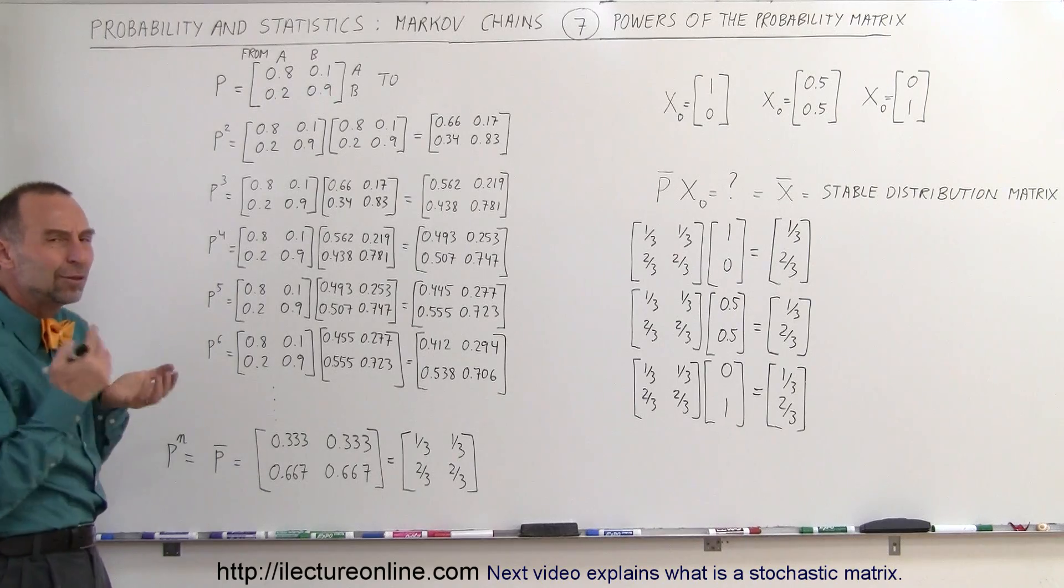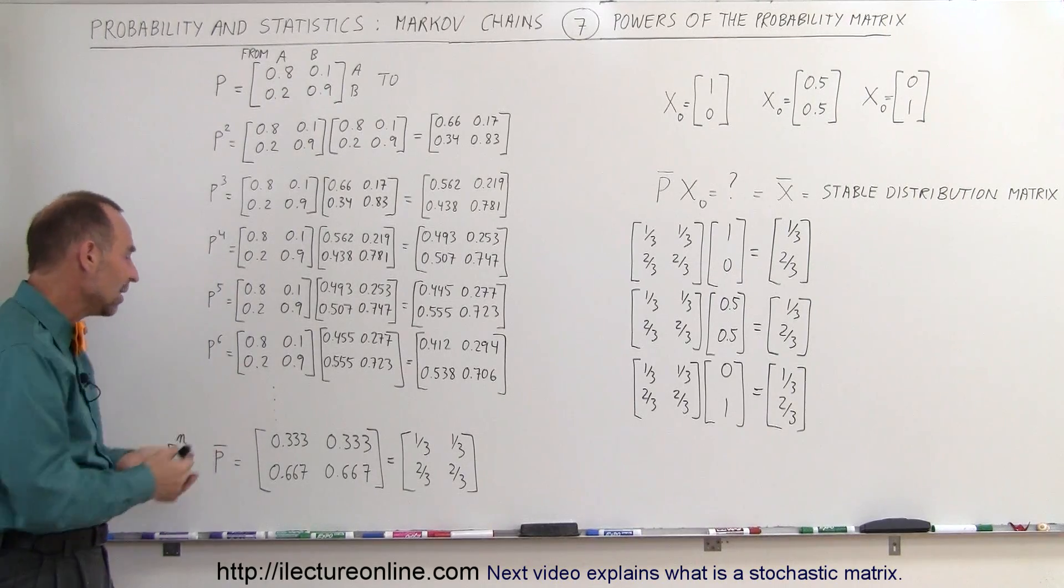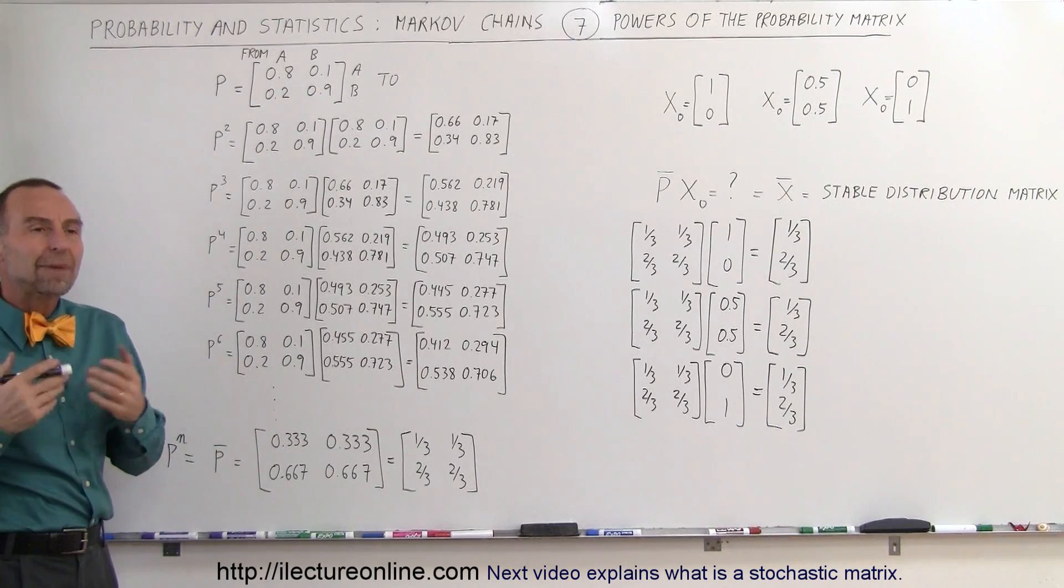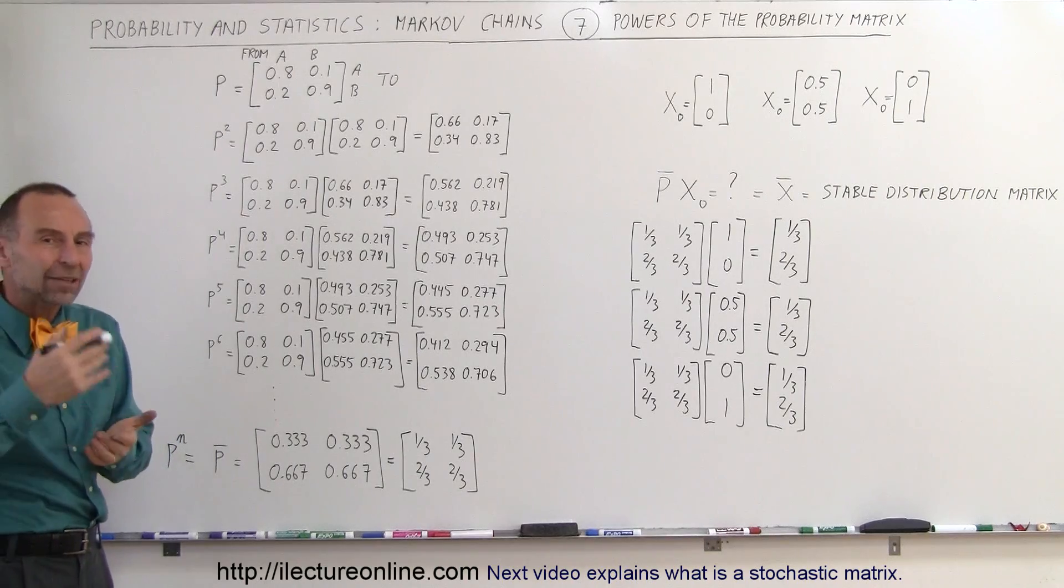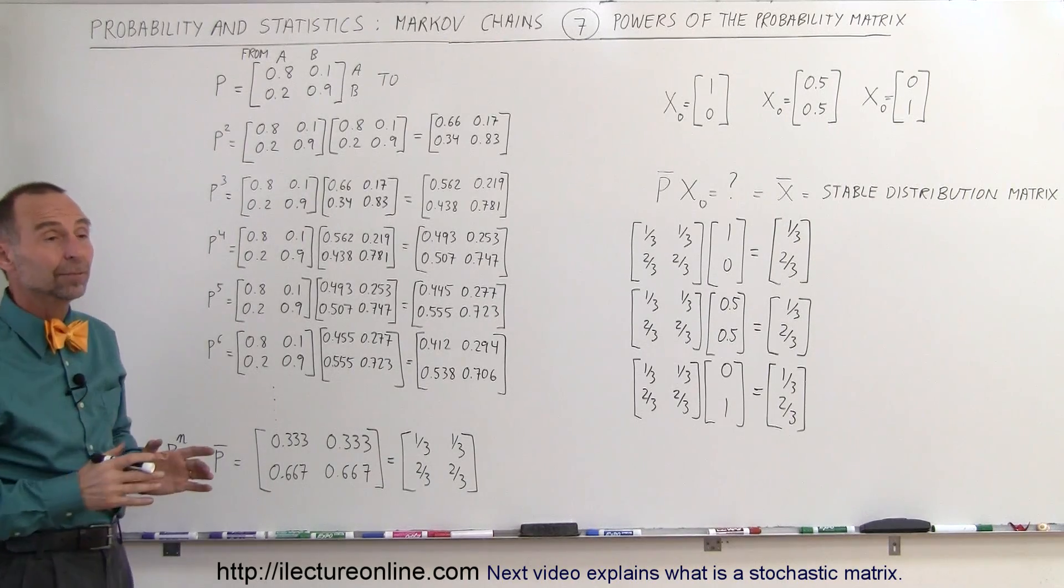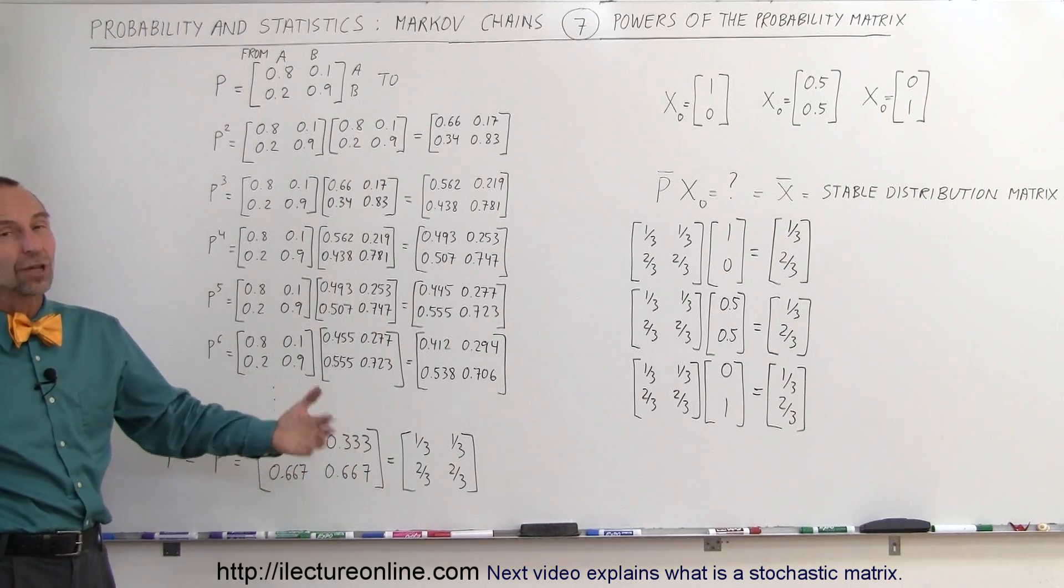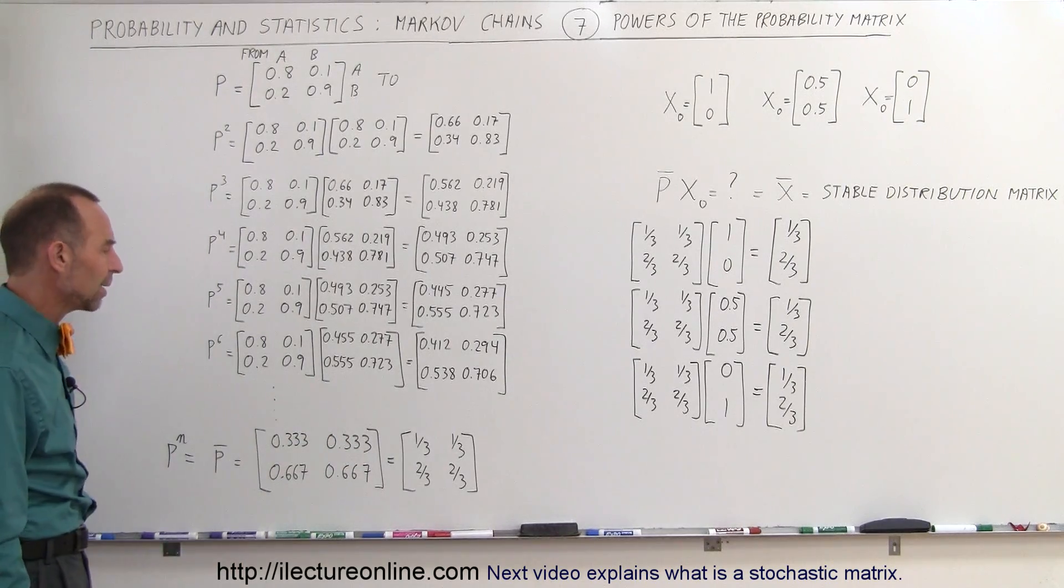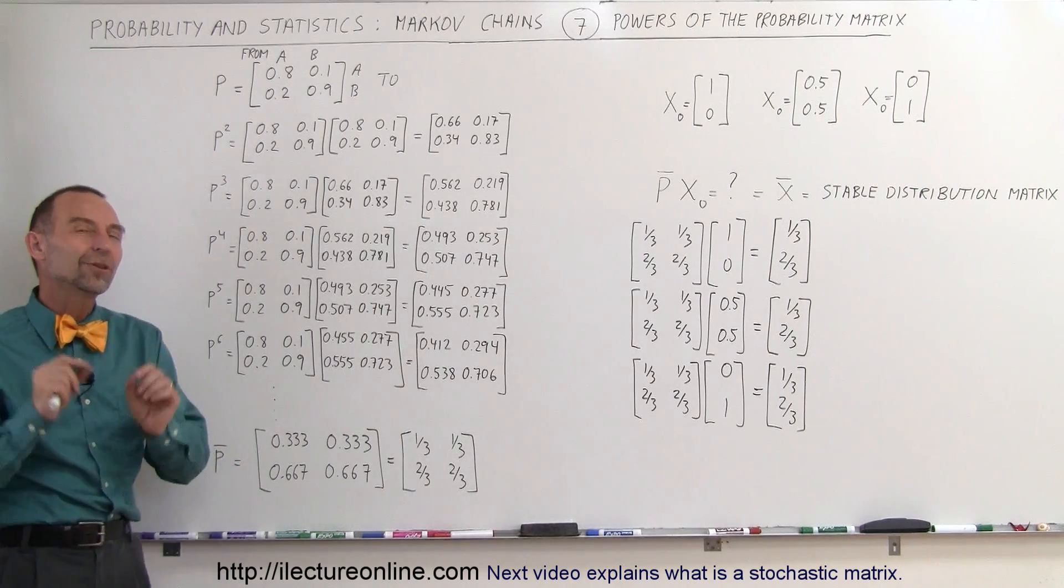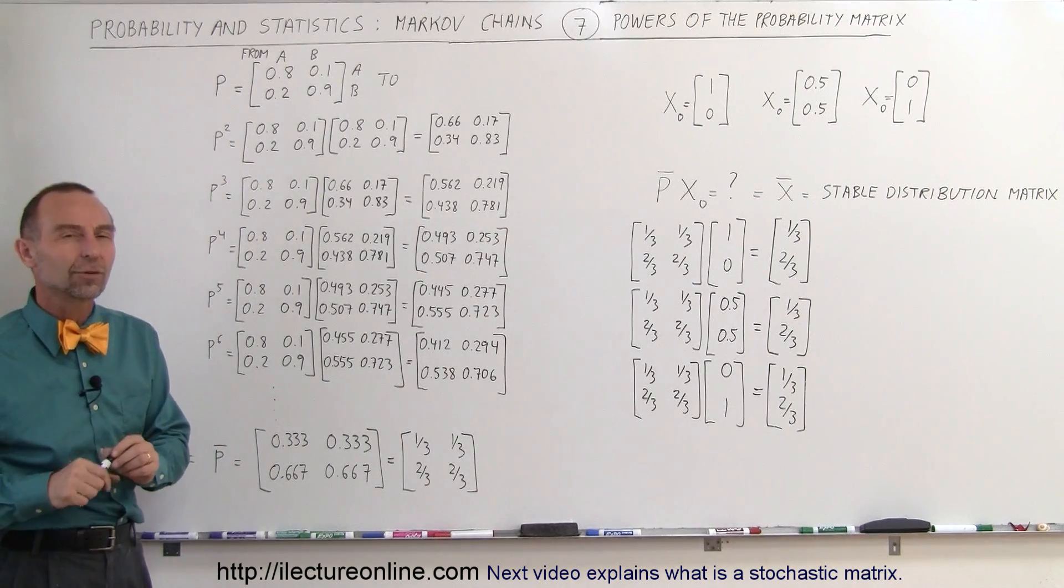Now the question is, how do we know that we reach the final probability matrix to the n power so that it becomes stable? Well, obviously you can do this over and over and over again until the numbers stop changing. Then you know you got a stable probability matrix to the n power. Or, there's some other method, and we'll show you how to do those other methods as well.